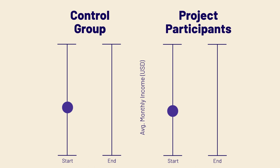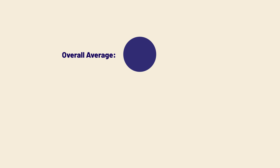Here's where our average income starts, and by the end of the project, here's where our average income ends up. This looks like a clear win for our project — the average income of our project participants rose much more than the average income of the farmers in our control group. Impact report complete... hold on a second.